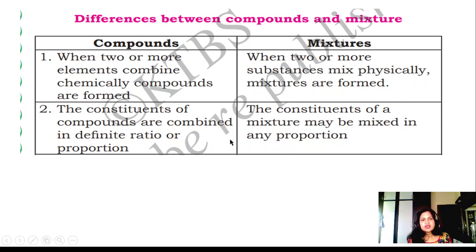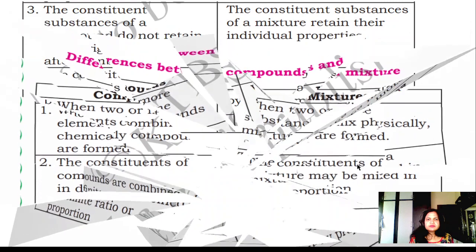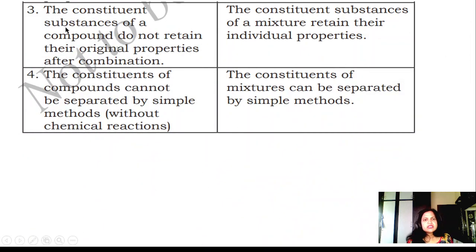The constituents of compounds are combined in definite ratios or proportions. The constituents of mixture may be mixed in any proportion. There is no ratio. The constituents of compounds do not retain their original properties after combination. Different properties will be formed. The constituents of mixture retain their individual properties.